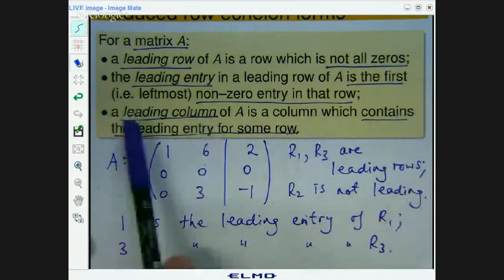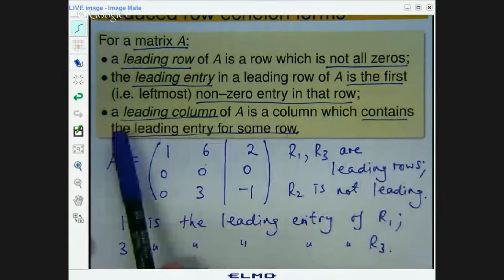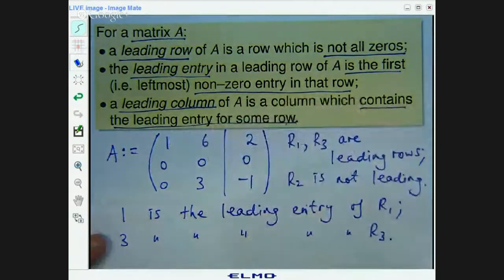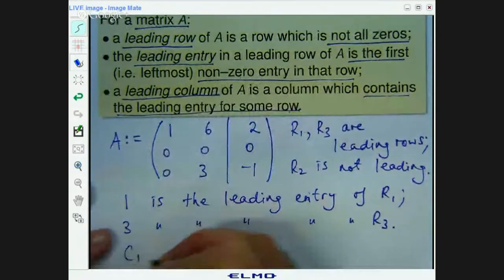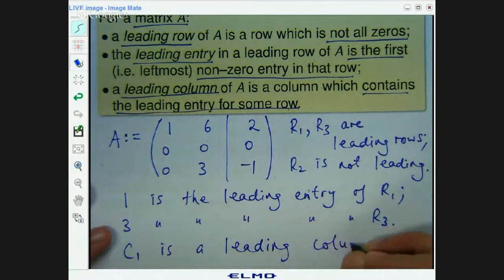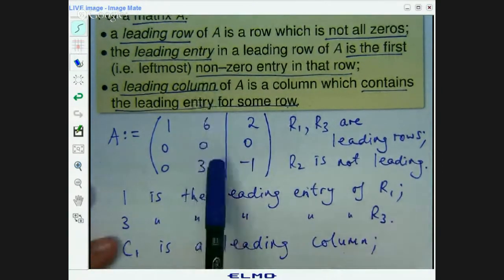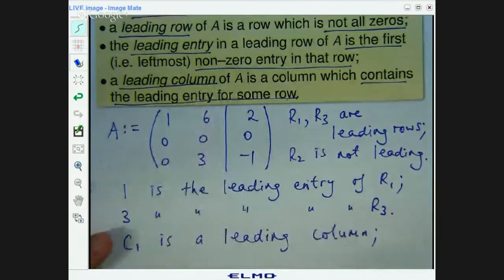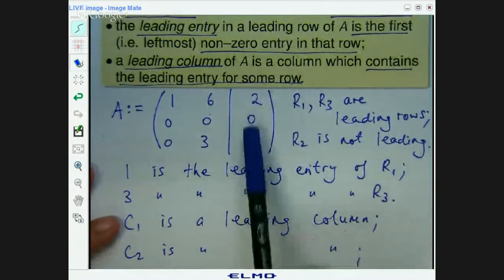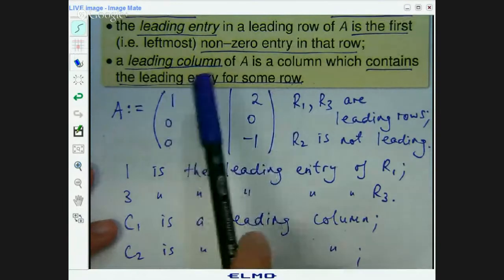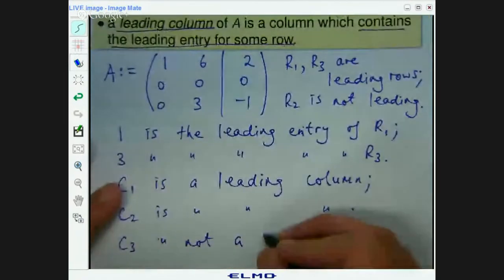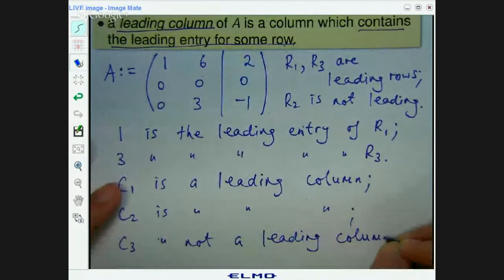Lastly, let's identify the leading columns. So we want to look at the columns and the ones that contain the leading entry for some rows. So let's look at column 1. Does that contain the leading entry for any of the rows? Well it does, that's leading entry of row 1. Ok, so column 1 is a leading column. What about the next one? Yeah, column 2, that contains that entry which is the leading entry for row 3. So column 2 is a leading column. And what about column 3? Well that doesn't contain any of the leading entries for any of the non-zero rows. Right? So column 3 is not a leading column.